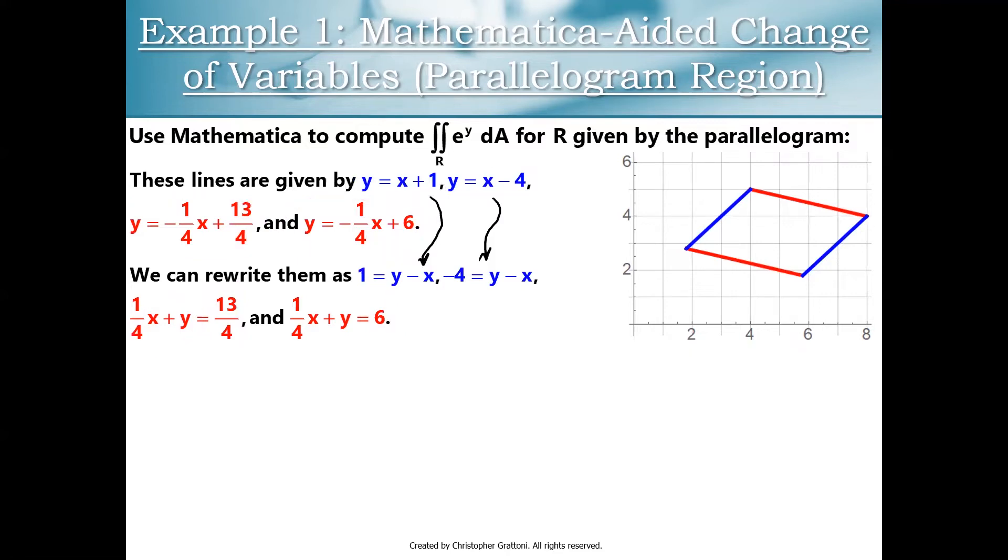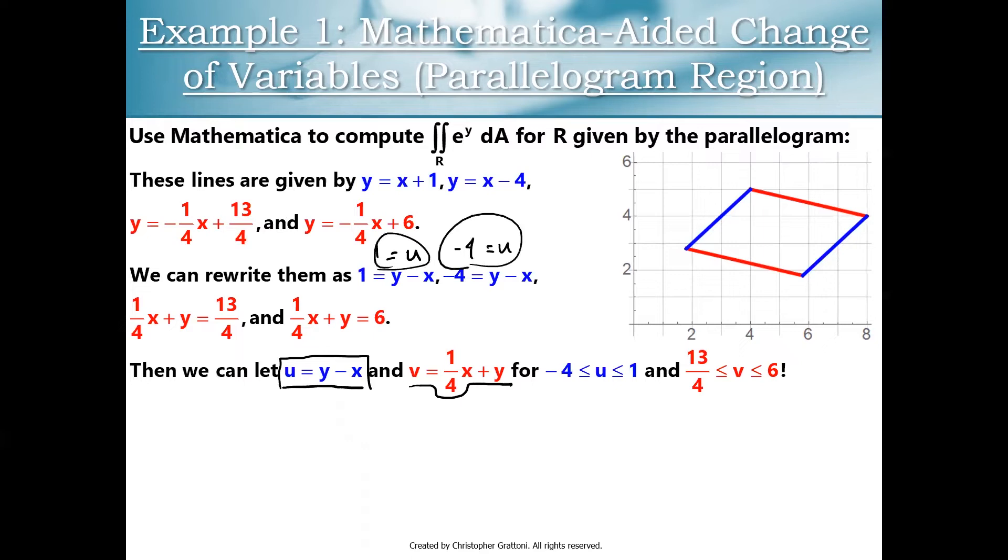The reason that you might be interested in doing this is now we could define a change of variables here. So we can let u equal y minus x and v equal 1 fourth x plus y, and what you'll notice is, oh look, look what's going on with u here. Look what's happening with u equals y minus x. Well, u goes from negative 4 to 1. Similarly, we could look at v. That means that v goes from 13 fourths to 6. So I have a change of variables and I also know what the limits of integration are going to be when I switch my integral over to an integral in u v space.